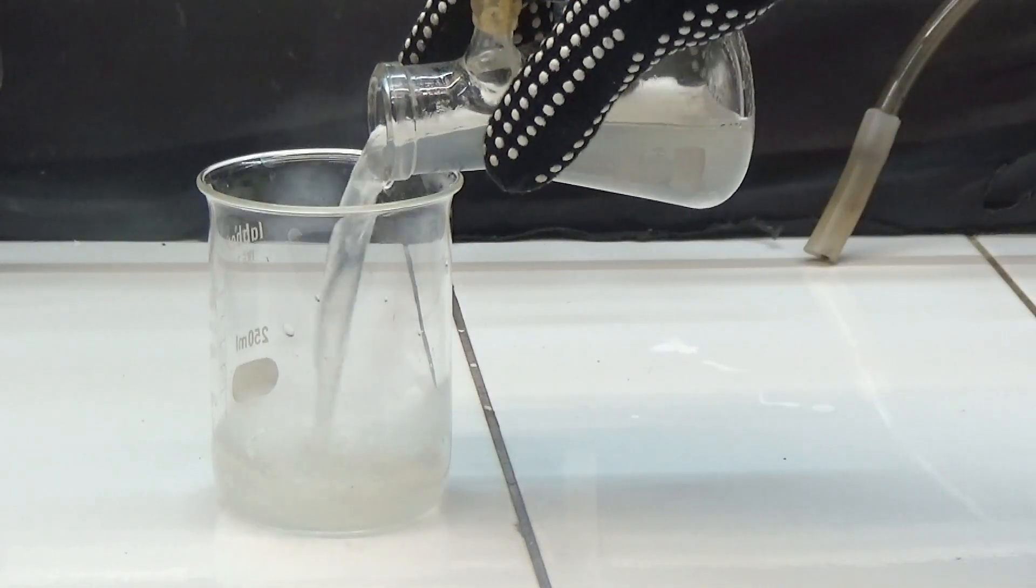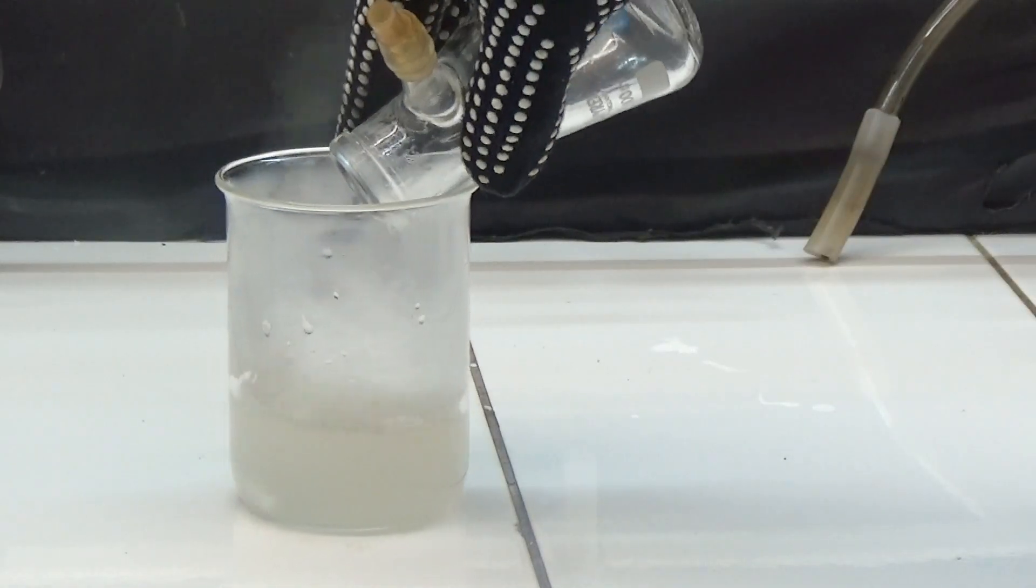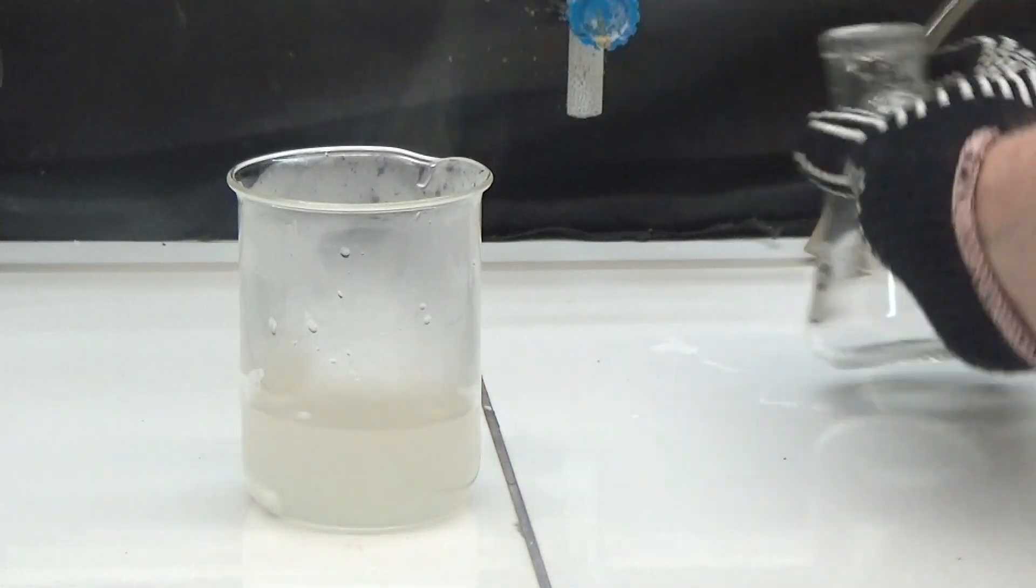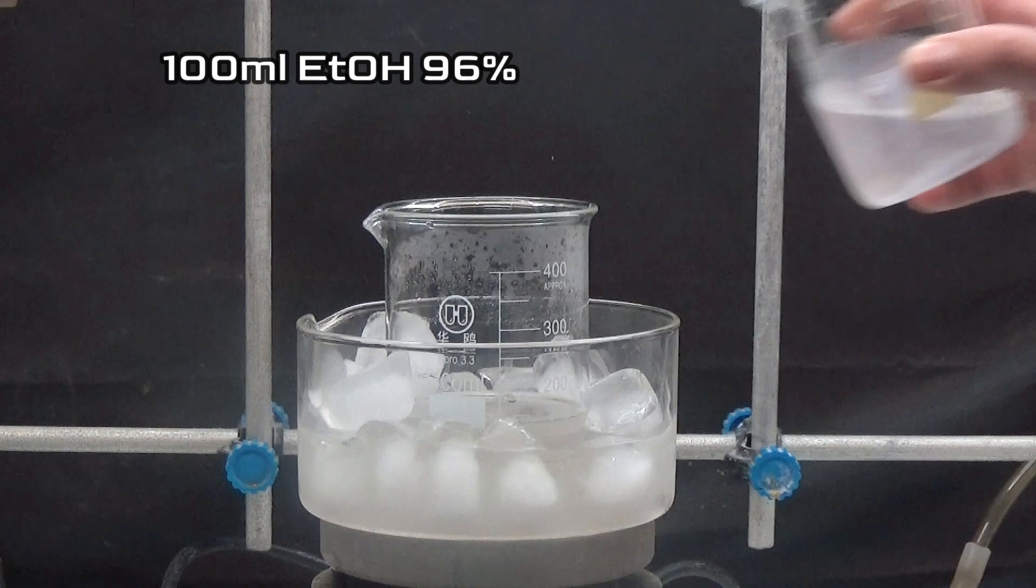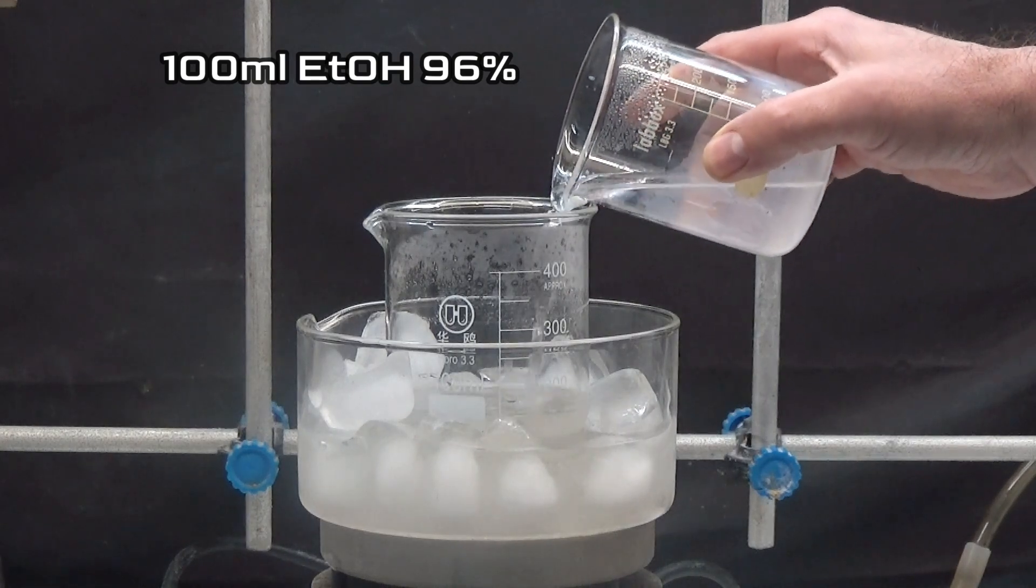Put the solution in a 500 milliliter beaker in an ice water bath. With stirring, add 100 milliliters of 96% ethanol.